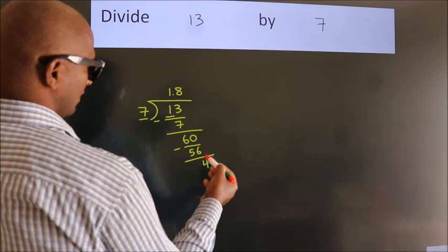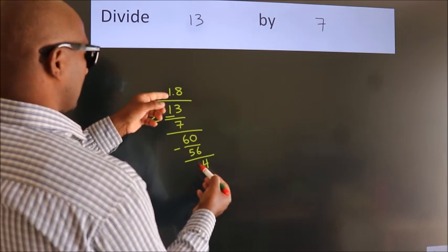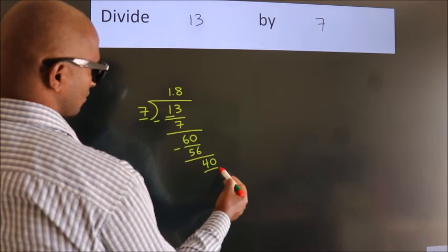After this, we already have the decimal. So directly take 0. So 40.